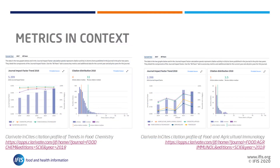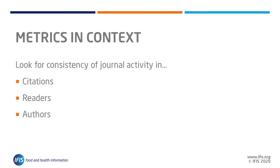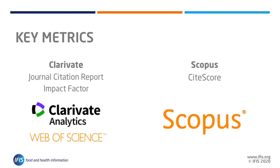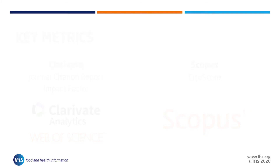The metrics themselves can be subject to a great degree of change. Just one highly cited paper can make a significant difference to the metrics of a journal year on year. So looking at a single metric for one year is not enough to determine the overall stature of a journal. By looking into their citation profile and metrics over the previous years, you will get a better idea of the consistency of how a journal is used by the field.